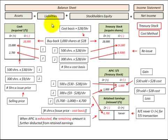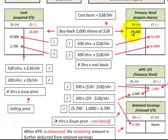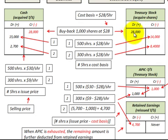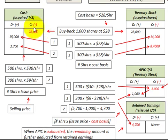Let's look at an example for recording Treasury stock using the cost method. When we buy back shares, we increase our Treasury account by the number of shares purchased times the cost per share — the price we had to pay when we repurchased the stock. That becomes our cost basis, which we'll use on a per share basis when we reissue the stock. We then decrease our cash account by the quantity repurchased times this cost basis.